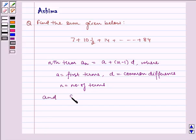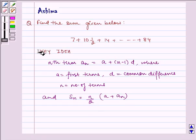And sum is given by n/2 multiplied by (a + an), where an is the nth term. Now this is the key idea to our problem. Let us write the solution.